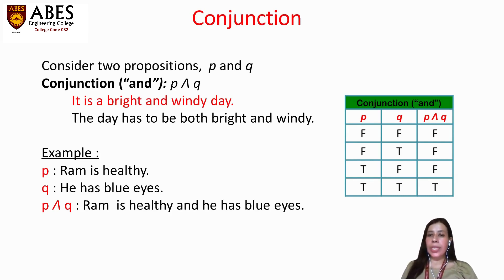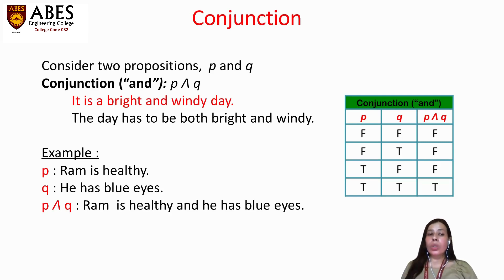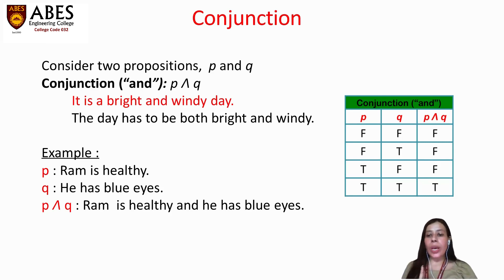Now for the truth table: we have taken two propositions P and Q and the conjunction P ∧ Q. If P and Q are both false, then P ∧ Q is false. If P is false and Q is true, then P ∧ Q is also false. We can see from this truth table that the conjunction of two propositions is only true when both P and Q hold the truth value true.